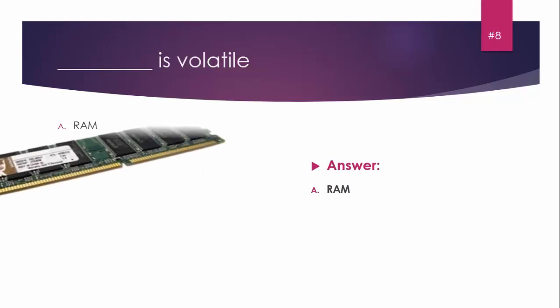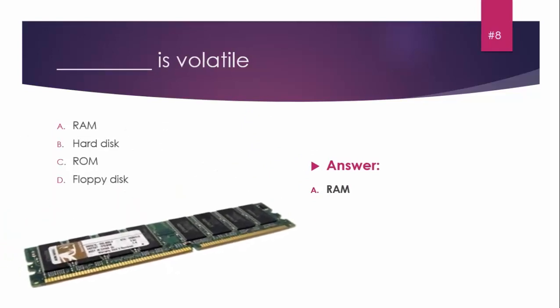MCQ number eight: Blank is a volatile memory. Options: A) RAM, B) Hard disk, C) ROM, D) Floppy disk. The answer is RAM - Random Access Memory. You can see this in the picture.